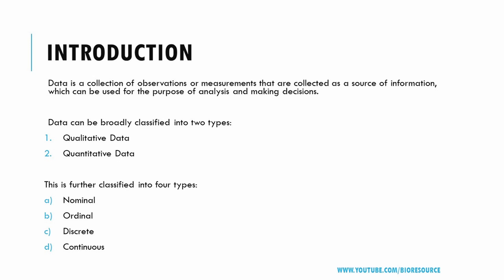Data is collected to analyze and draw conclusions or predictions. Statistical data is typically collected through surveys, experiments, or observation, and it is used to describe the characteristics of a group or a population.